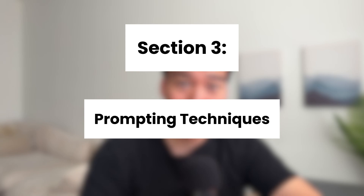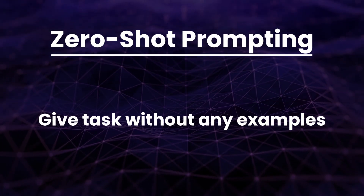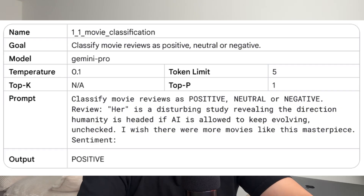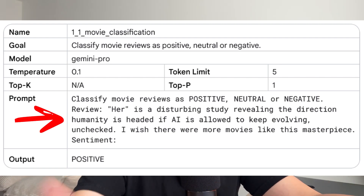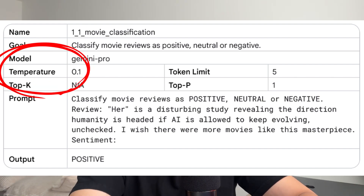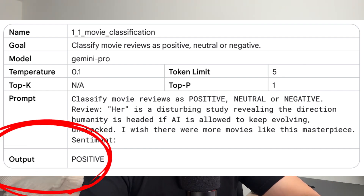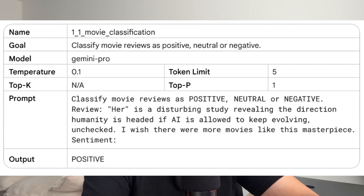Now that we know how to control the AI's output, let's cover the different prompting techniques. First, we have zero-shot prompting, where we give a description of a task without any examples — like asking what is the capital of France and expecting a direct answer. Here's an example: a prompt to read through movie reviews and say if the sentiment is positive, negative, or neutral. With a low temperature for predictable outputs and a token limit of five, the output will almost always consistently return one of those three labels.